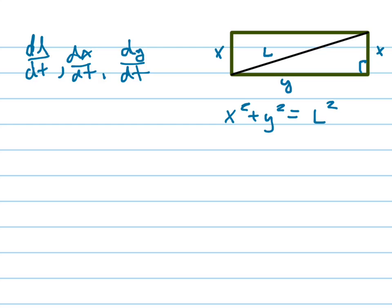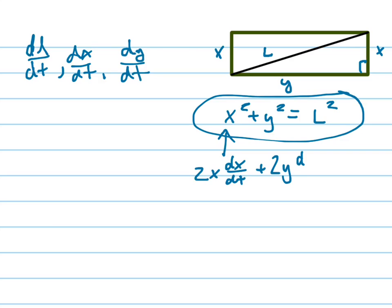If I want to take the derivative with respect to time, I do implicit differentiation. So I take 2x times DX/DT plus 2y times DY/DT equals 2L times DL/DT. I'm just doing implicit differentiation with respect to T.